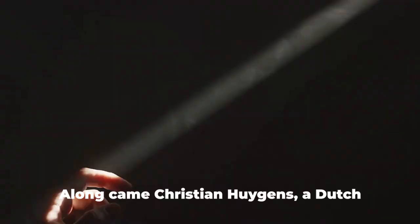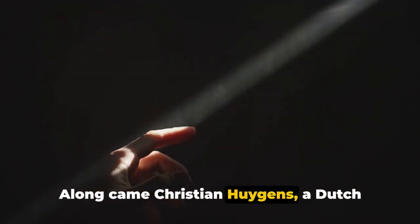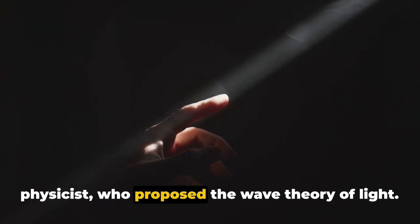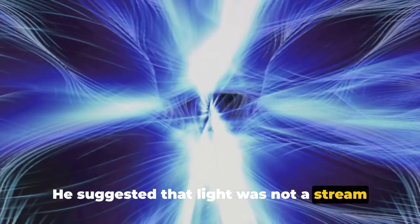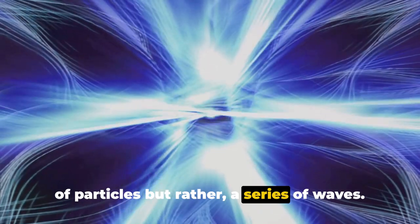But there was a twist in the tale. Along came Christian Huygens, a Dutch physicist who proposed the wave theory of light. He suggested that light was not a stream of particles, but rather a series of waves.